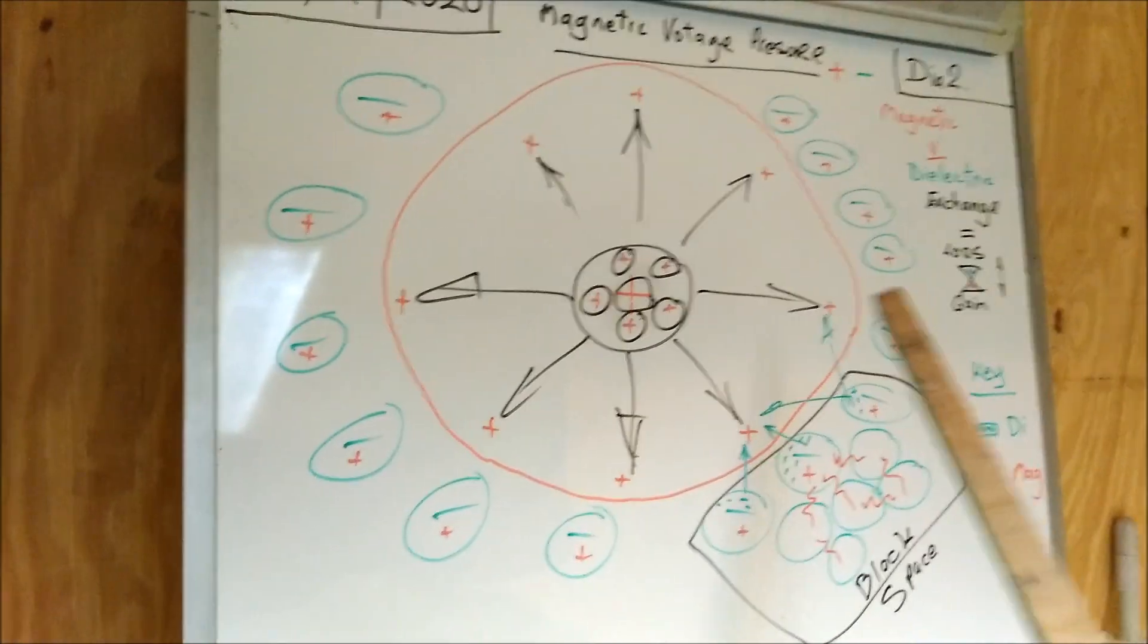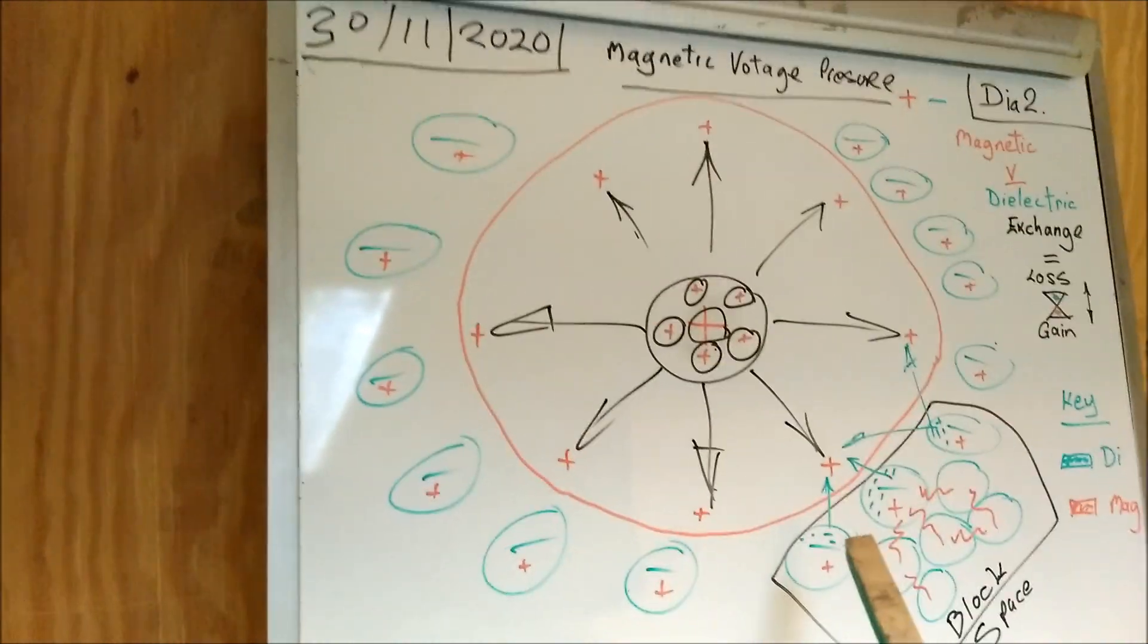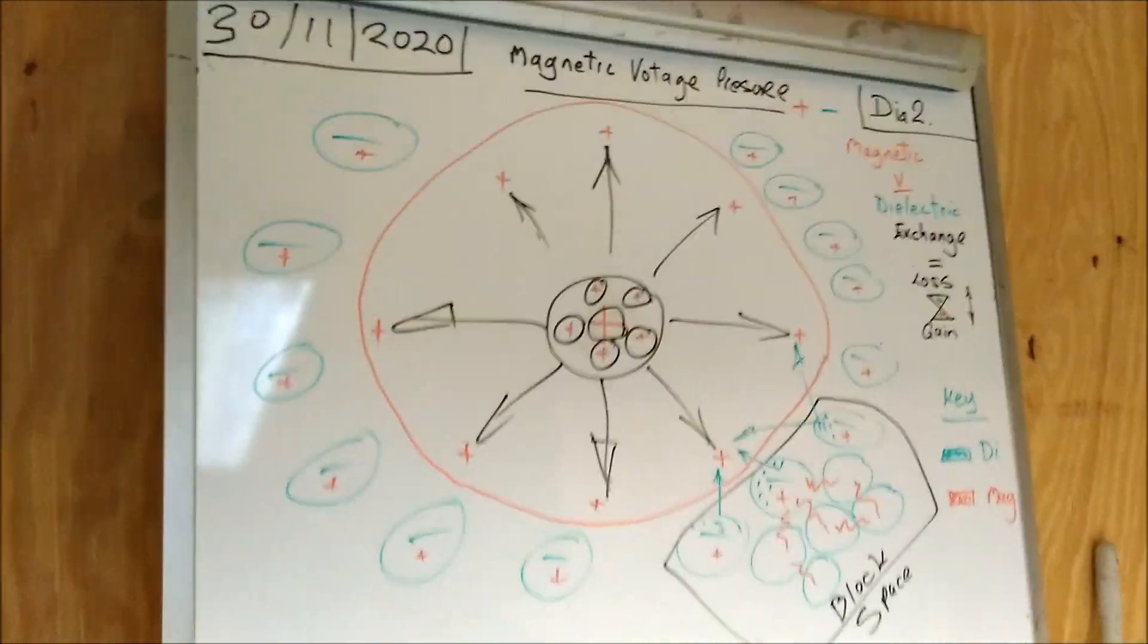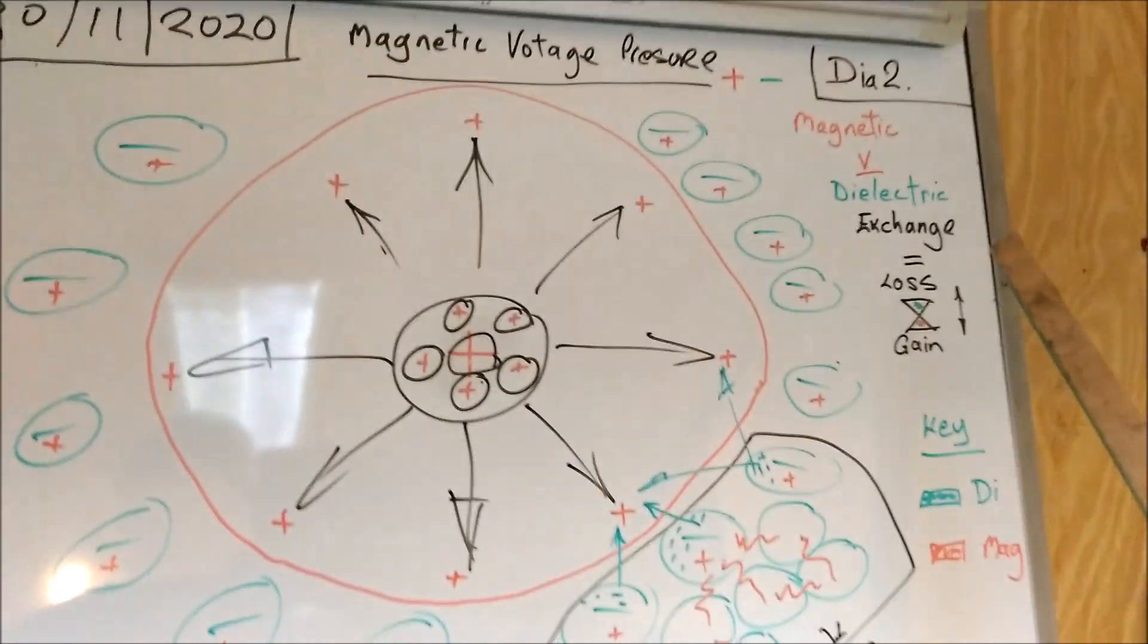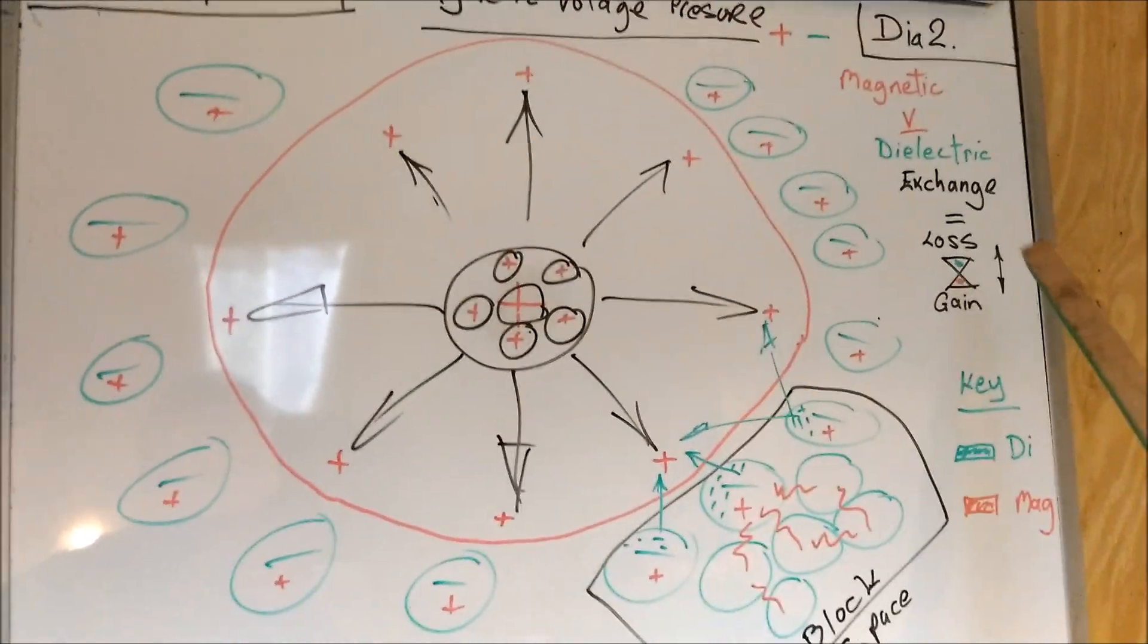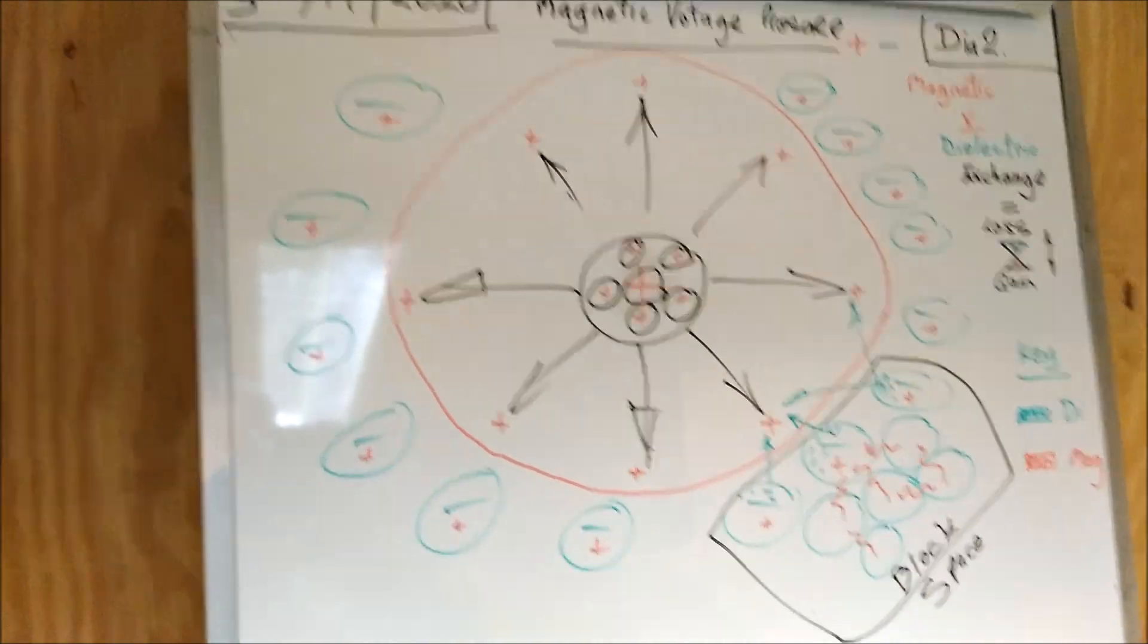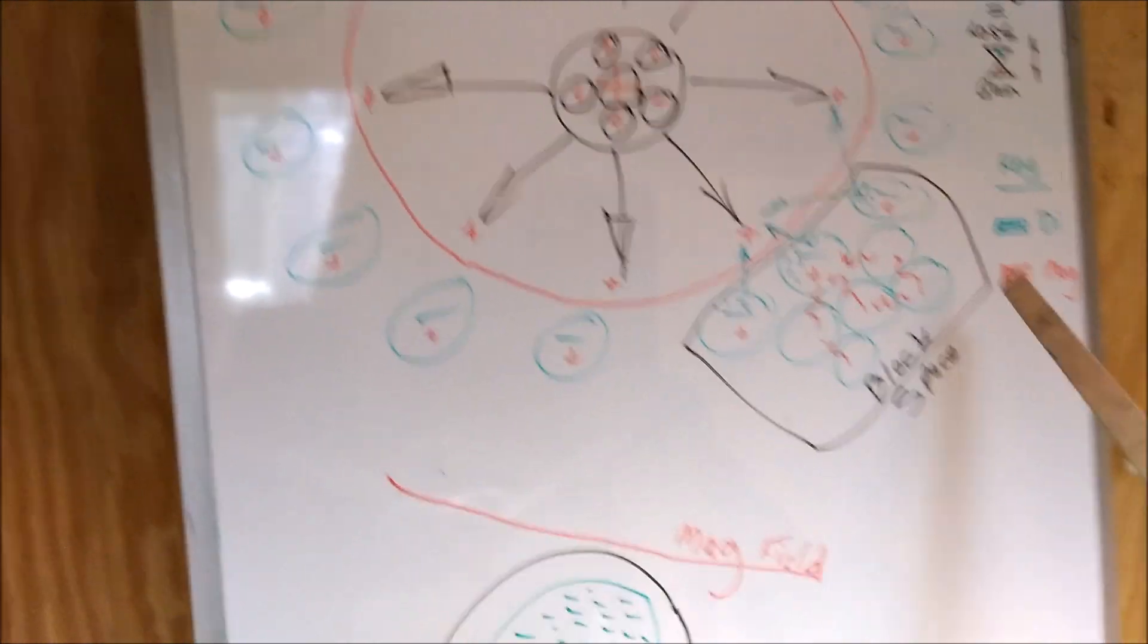And then I've got this return static flux which I showed you in one of the last videos. What I think is happening in the ether is there's a magnetic and dielectric exchange if you like - gain and loss, the plus chasing the minus is what's happening.